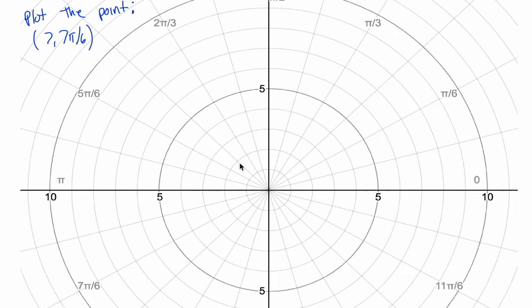To see if that makes sense, see if you could find the point 7 comma 7 pi over 6, where the fact that the second coordinate appears to be an angle kind of implies that we're talking about polar coordinates.